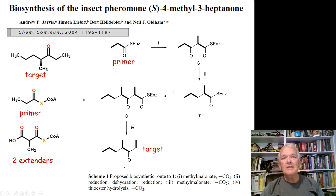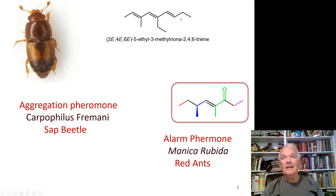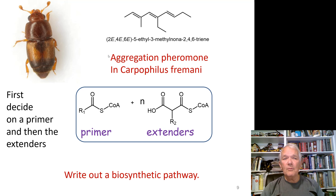The key steps are: identifying the primer, identifying the extenders, and then for each step in between just writing down the basic ideas of what reactions need to occur. Now let's work on a more complicated one. This molecule has lots of functionality — a bunch of double bonds, meaning we're not going to be reducing any double bonds — plus a methyl and an ethyl group. To figure it out we first decide on the primer, figure out the extenders, and then write out a biosynthetic pathway.